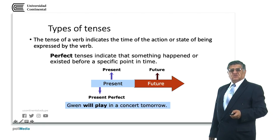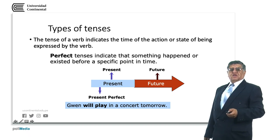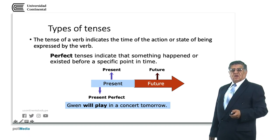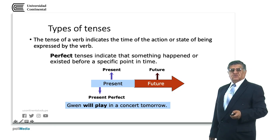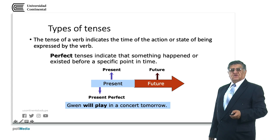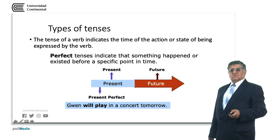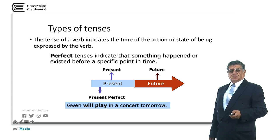A future action is expressed using the auxiliary will and the infinitive form of the verb. For example: Gwen will play in a concert tomorrow. The future will have at least three forms: the will form, the going to be form, and the progressive form.